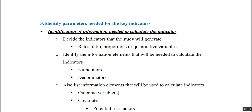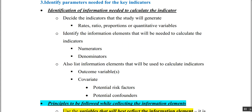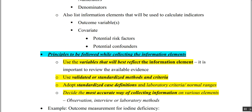The third step in project management is to identify the parameters needed for your key indicators — the information needed to calculate your indicator should be very clear. First, decide the indicators the study will generate, such as rates, ratios, proportions, or variables. Then decide what information is needed to calculate these — the numerators and denominators — and list additional information like covariates, risk factors, and potential confounders.